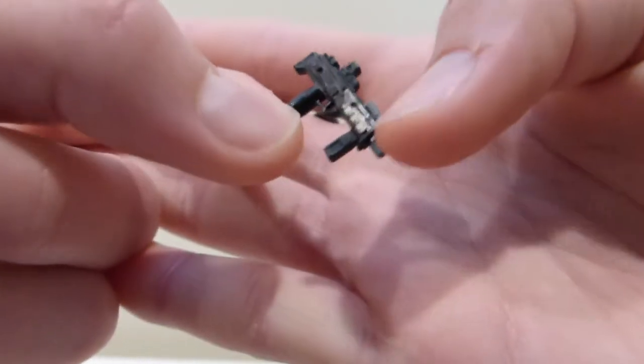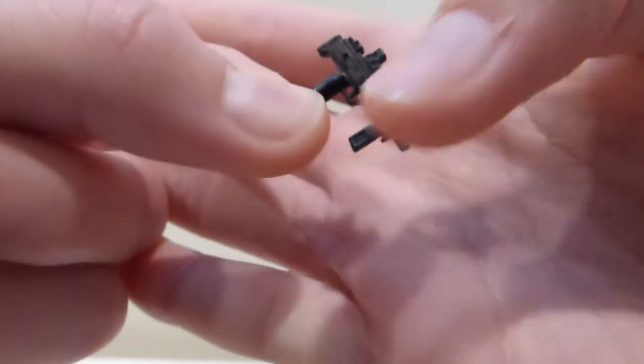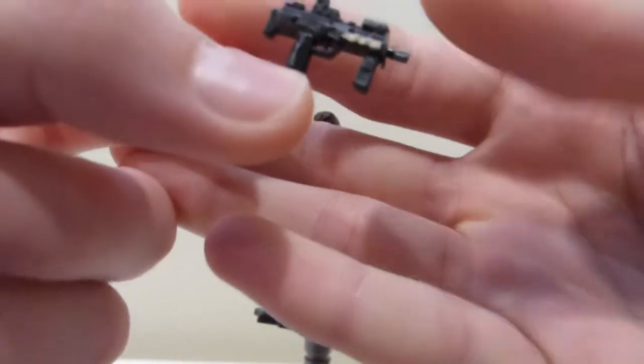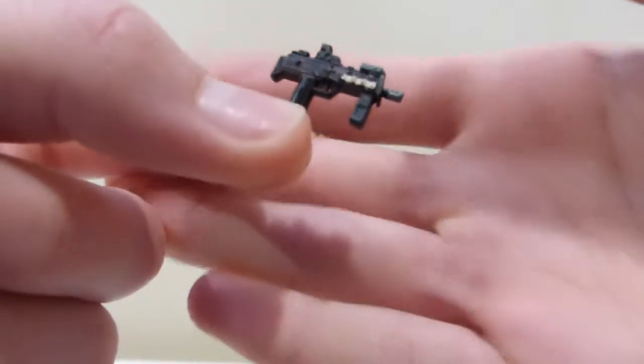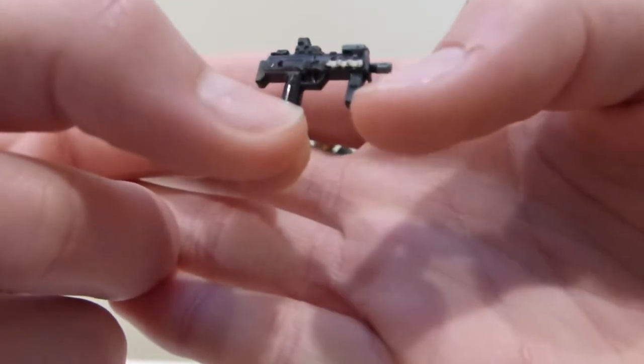And I did some grey on the EOTech, and some lighter grey on the Flash Hider and the Laser. And then I painted the little movable foregrip in dark grey.